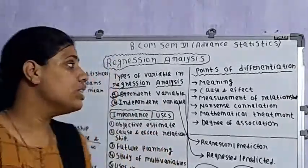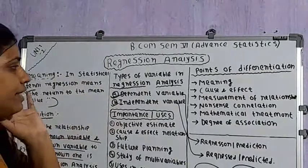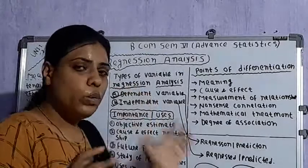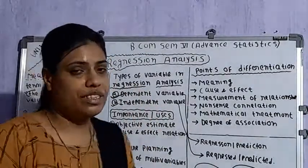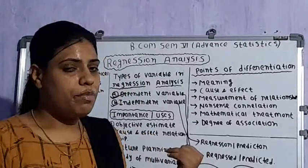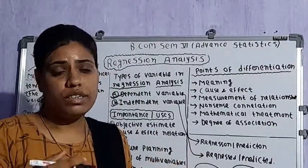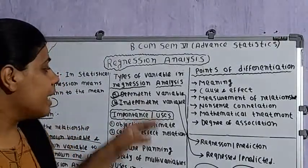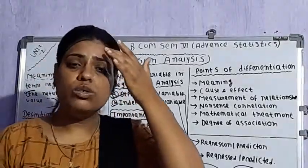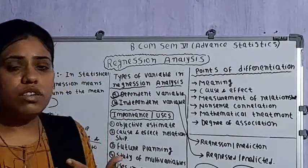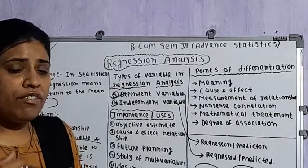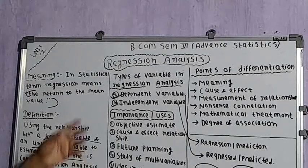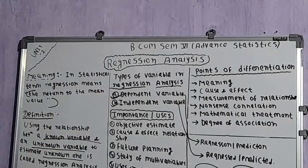In regression analysis, there are two kinds of variables — dependent and independent — and these variables are used to obtain the regression equation. It helps to find out the value of another variable with the available value of one variable. Now we are going to see the importance or uses of regression analysis. The first one is objective estimate.